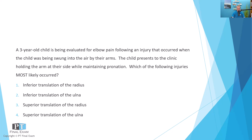So we have a mix-and-match style question. A three-year-old child with elbow pain after being swung into the air by their arms, presenting holding the arm at their side while maintaining pronation. Which injury most likely occurred? The options are inferior translation of the radius, inferior translation of the ulna, superior translation of the radius, or superior translation of the ulna.